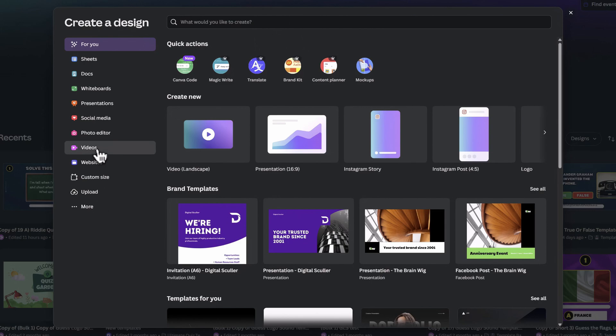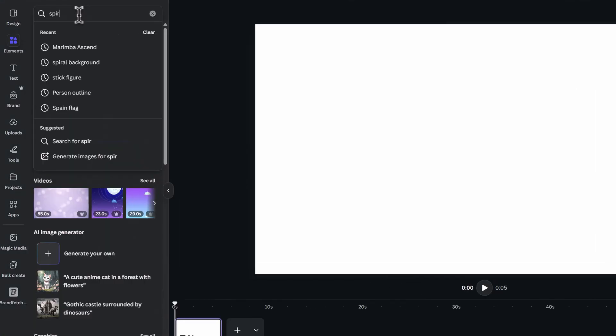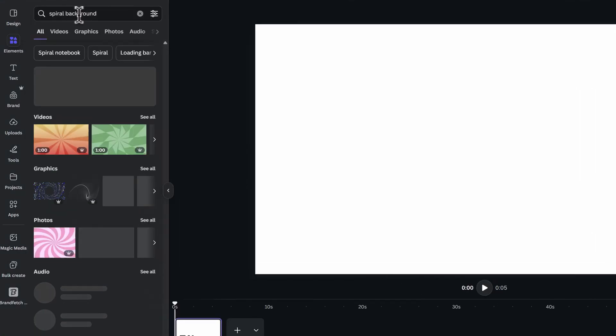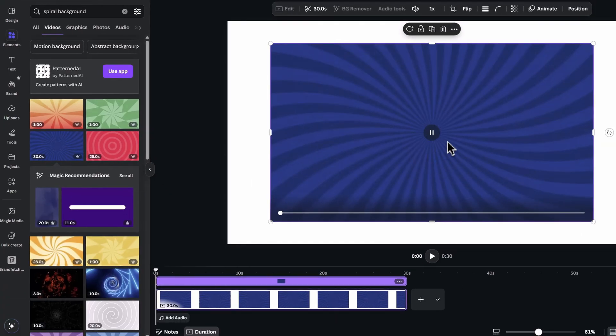Go to Canva, and switch to the Videos tab. Click on the first option which is Landscape to start creating the video. Go to the Elements tab and search for Spiral Background. Switch to the Videos section and click on one of the results. We can go for the blue color.